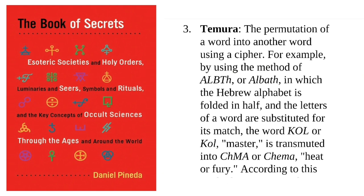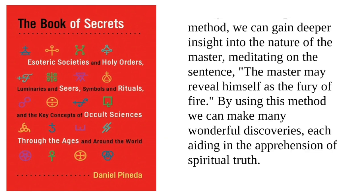3. Temora: the permutation of a word into another word using a cipher. For example, by using the method of Albath, in which the Hebrew alphabet is folded in half and the letters of a word are substituted for its match, the word Kol, meaning master, is transmuted into Chema, meaning heat or fury. According to this method, we can gain deeper insight into the nature of the master.